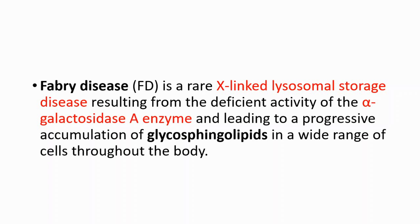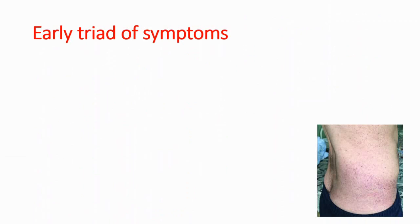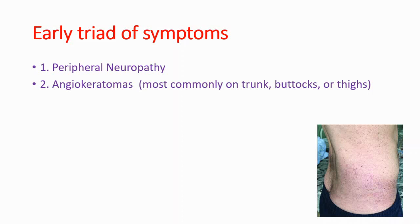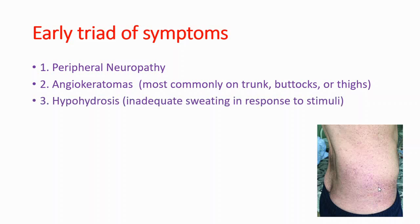The early triad of symptoms includes peripheral neuropathy — due to damage seen in nerve cells — angiokeratomas, which are benign tumors of capillaries most commonly seen on the trunk or thighs, and hypohydrosis, which is inadequate sweating in response to stimuli, an interesting symptom seen in Fabry disease.